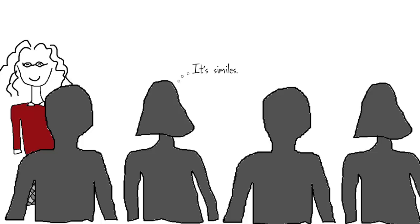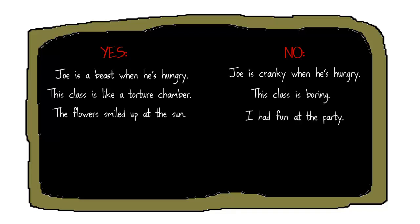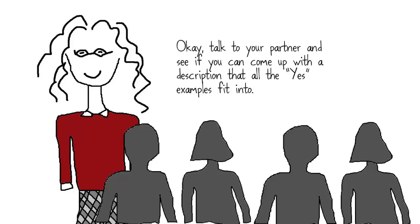At this point, students should already be starting to develop a theory about the concept you're presenting. You might ask them to share their thoughts or keep silent. Now that you have these first few examples, show a few more, gradually adding more that stray from the basic level. On the yes side, I might add: 'The flowers smiled up at the sun.' And on the no side: 'I had fun at the party.' Here I'm starting to not do such an even parallel between the two, because I want to broaden their understanding. I'll also add: 'My computer refuses to cooperate.' Now ask students to come up with a list of attributes that describe this concept.